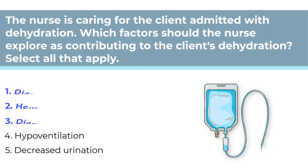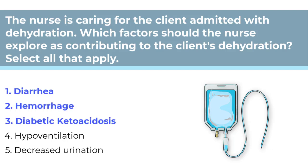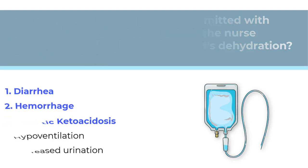The correct answers are 1, 2, and 3. All three of these conditions cause fluid volume deficit. Number 4 and 5 are incorrect because hyperventilation is a risk for dehydration, not hypoventilation, and decreased urine output is a symptom of dehydration, not a cause.